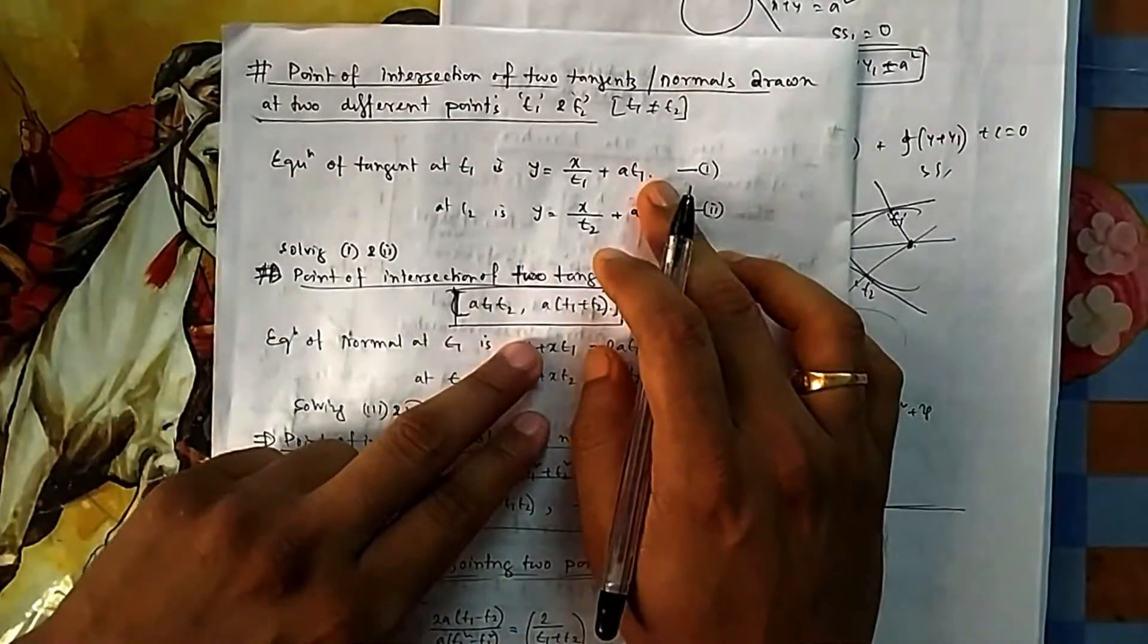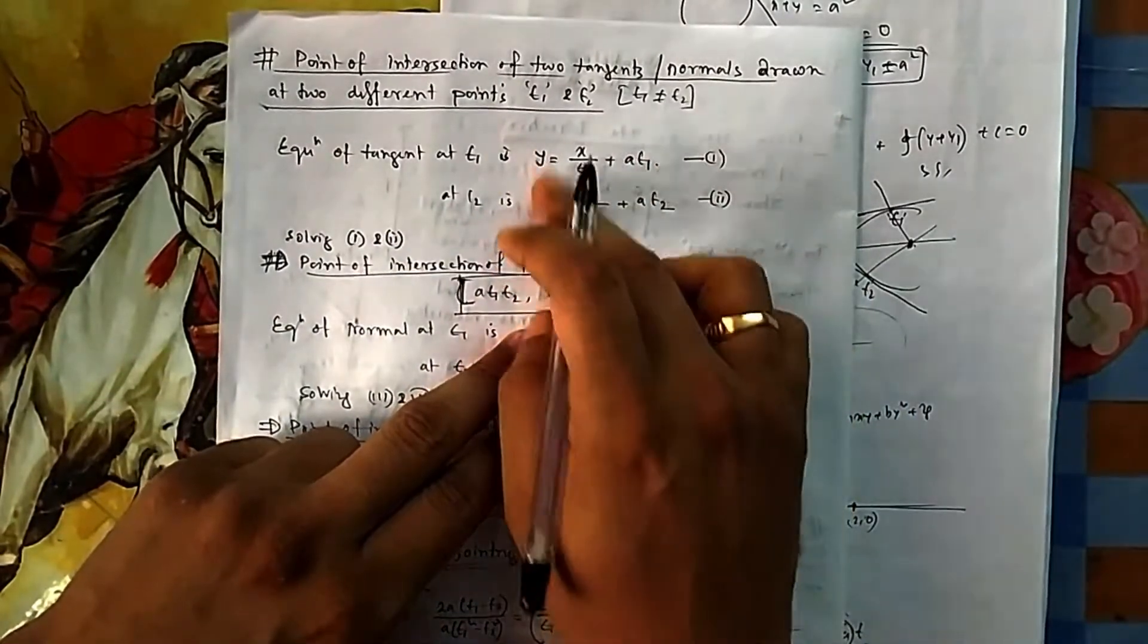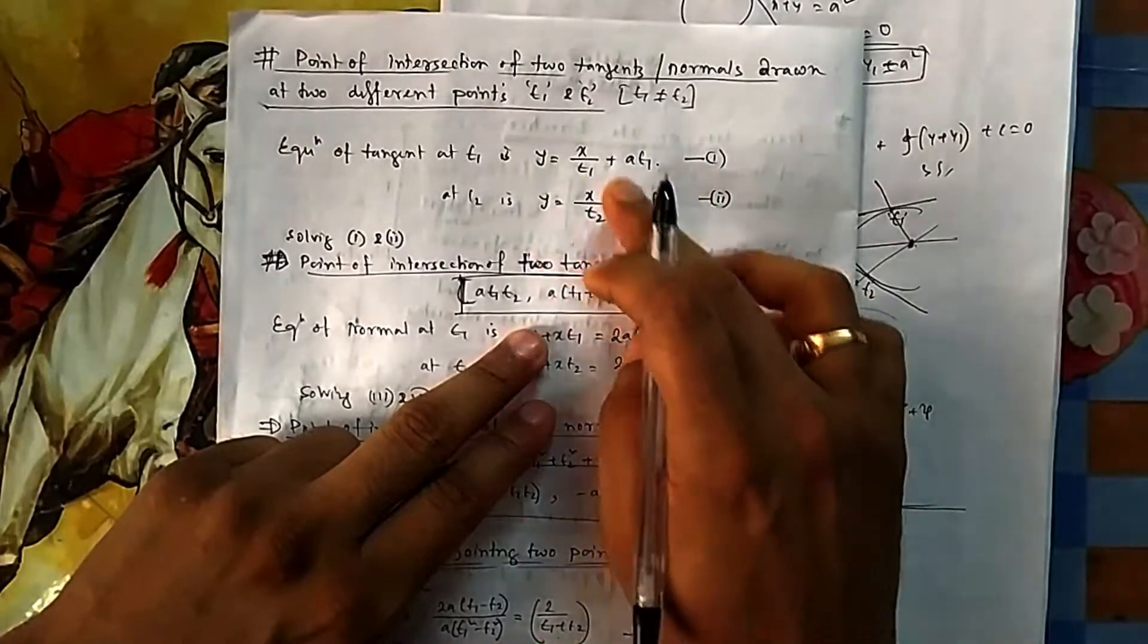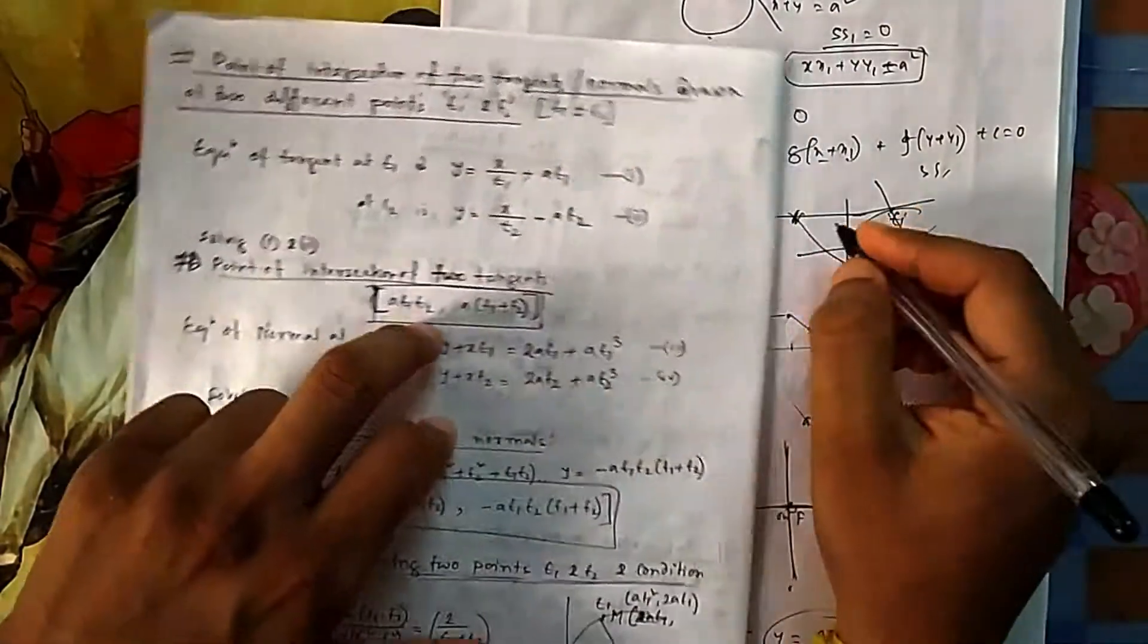So once you know this you solve these two. I am not solving these two, you can deduce then y will get cancelled. You find x, if you put x you will find y, then the point of intersection is this one.